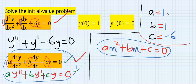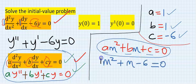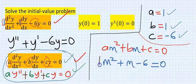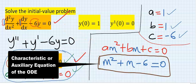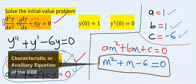Next, I will substitute my a, b, c into this quadratic equation. A here is one. B here is one, but it will not be written. This becomes the characteristic equation of the differential equation or the auxiliary equation of the differential equation.